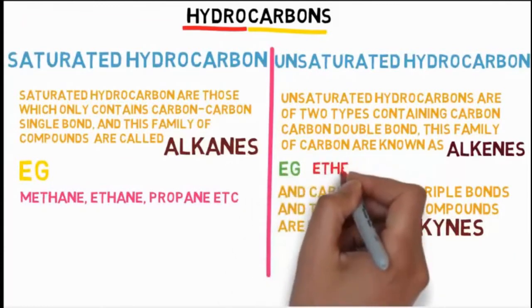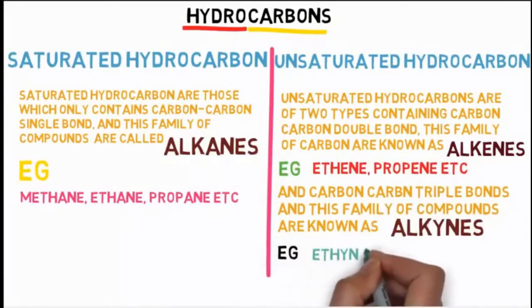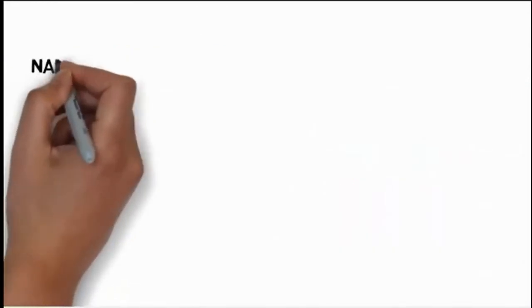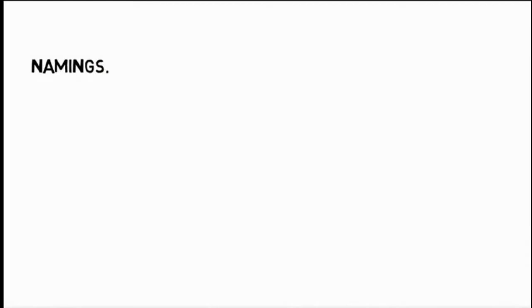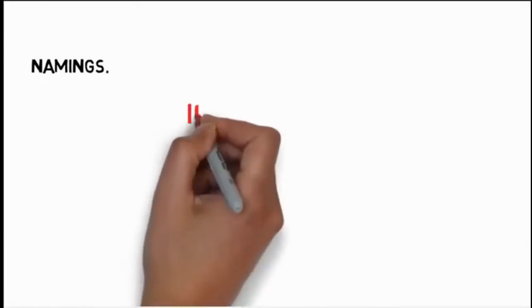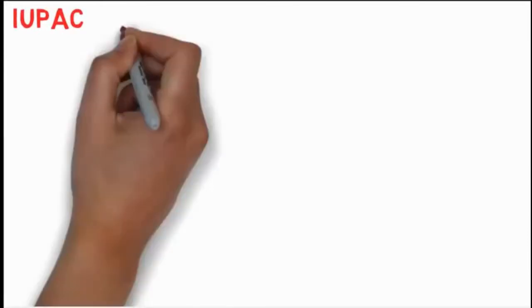Similarly, some compounds of alkenes are ethene and propene, etc. It's not me or your friend who decides the naming of these compounds. There is an authority which does so — the IUPAC, International Union of Pure and Applied Chemistry. This union decides rules and steps of naming these varied compounds of carbon.